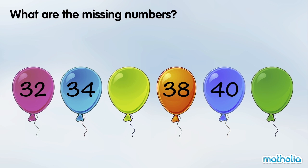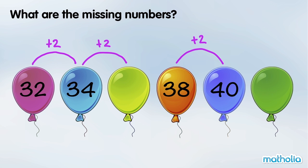What are the missing numbers? 32 plus 2 is 34. 38 plus 2 is 40. In each step, the numbers are going up by 2. 34 plus 2 is 36. 40 plus 2 is 42. The missing numbers are 36 and 42.